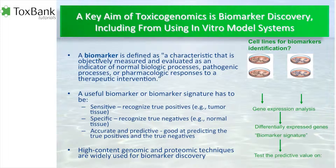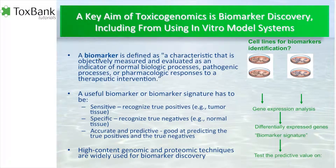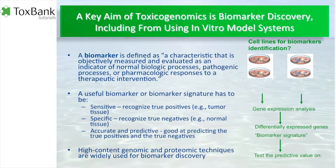This very broad study of omics information, trying to measure everything that goes on in a cell, very often has the ultimate aim of looking for the magic bullet. A biomarker that could be a typical measure telling us if something is wrong or not is a very strong aim. A biomarker or biomarker signature has to be very accurate and predictive — it also has to be sensitive. It should not falsely say a chemical is toxic when it is not, nor say something is safe when it isn't; it should be true positive.